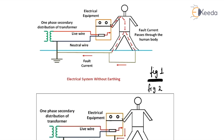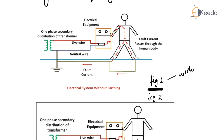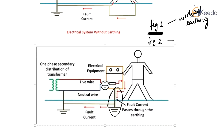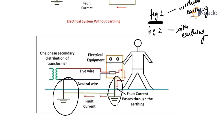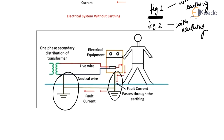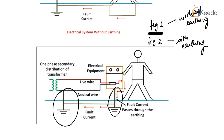Here are two figures. Figure one shows the electrical system without earthing, and figure two shows the electrical system with earthing. In the second figure, earthing is done by electrically connecting the respective part of the installation to a system of electrical conductors or electrodes placed near or below the ground level. The earthing mat or electrode under the ground has a flat iron riser through which all the non-current carrying metallic parts of the equipment are connected. When a fault occurs, the fault current flows through the earthing system to the earth, thereby protecting the equipment.